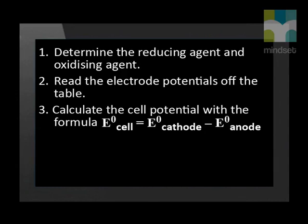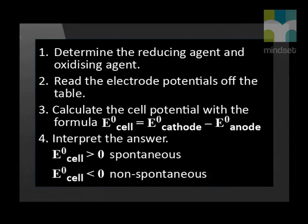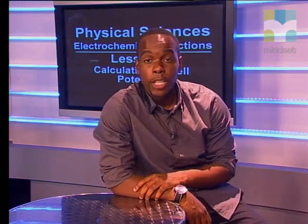Step 3 is to substitute the values into the formula for the E° cell. You will find this formula on the data sheet and should write it down as it appears there — do not use any abbreviations. Step 4, the final step, is to interpret the answer: if the E° cell is a positive value it will be a spontaneous galvanic reaction, but if the answer is negative it will indicate a non-spontaneous electrolytic reaction.